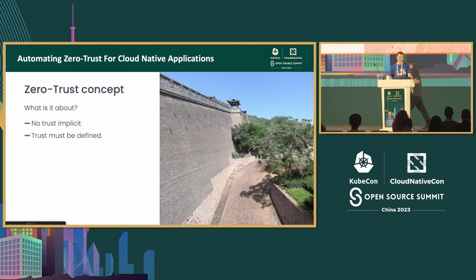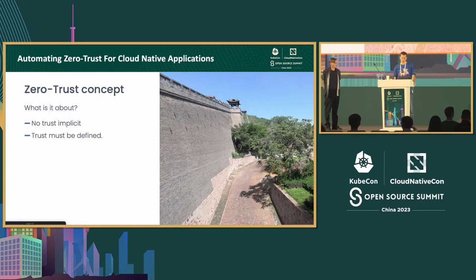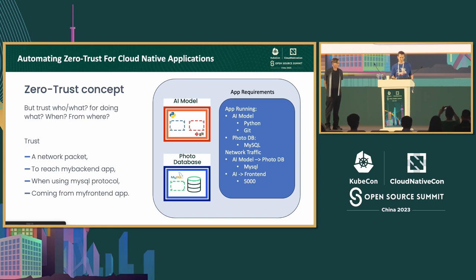Zero Trust is about not trusting anything implicitly — everything is blocked by default unless explicitly defined as trustworthy. This is not a new concept; it has been around for many years, not only in IT. The key questions are: trust who, what, for doing what, when, and from where — to better understand how to apply this concept to real-life scenarios.